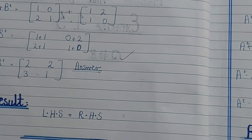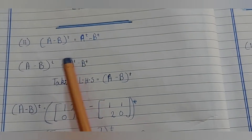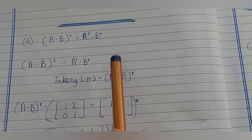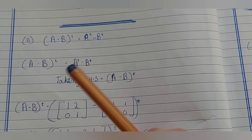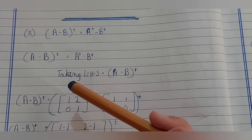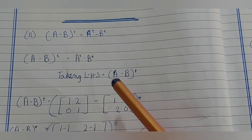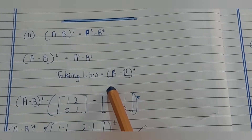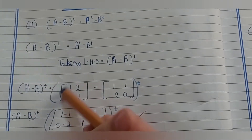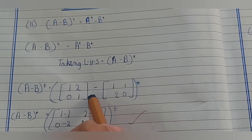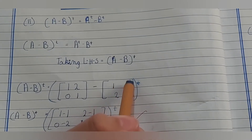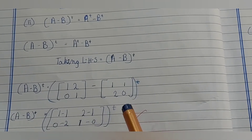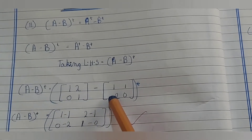LHS equals RHS, so part 1 is complete. Part 2 states: (A − B) transpose is equal to A transpose minus B transpose. Taking the left-hand side: (A − B)^T. We first solve the bracket, so we compute A minus B: [1−1, 2−1; 0−2, 1−0].